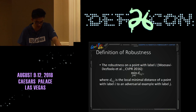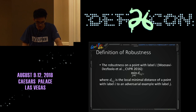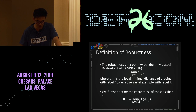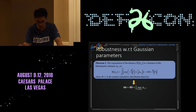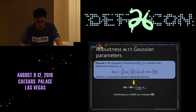How does MMD relate to robustness? We first give the definition of robustness: the robustness on a point with label i is defined as the local minimum distance from it to an adversarial example with a different label. We further define the robustness of the classifier as the minimum expected local distance. Then we get the relation between the expected local distance and the Gaussian parameters. Here, delta_ij is the Mahalanobis distance between two Gaussian components of label i and j in the mixture of Gaussians. We find that the robustness can be approximately represented in a simple form, and we conclude that if the feature distributes as MMD, then the approximate robustness is maximized.